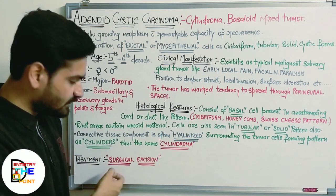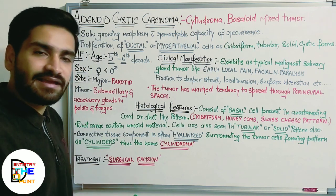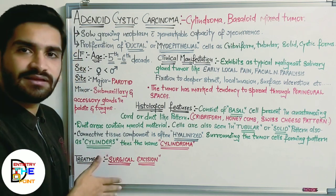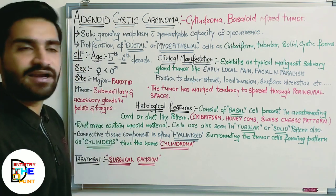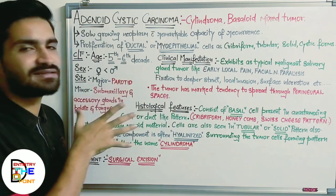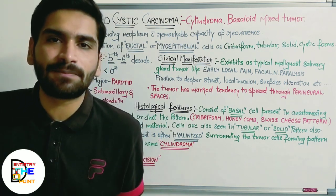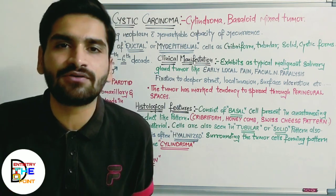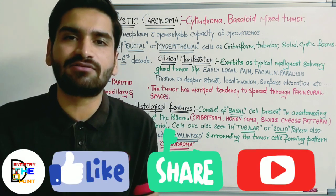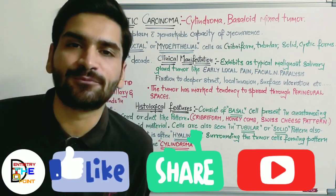The treatment for this tumor is surgical excision. Various options like radiation were tried but were not successful, so surgical excision remains the treatment option for this kind of tumor. This completes the discussion of adenoid cystic carcinoma. Hope you enjoyed the video — please like, share, and subscribe to our channel. If you have any doubts, please write in the comment section and we'll be happy to help. Thank you.